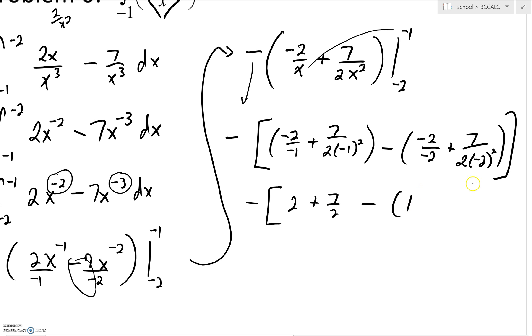And then negative 2 over negative 2, well, that's just going to become a positive 1. Negative 2 squared is a 4. 4 times 2 is 8. So we'd have 7 all over 8. And again, if you'd like to distribute that negative, you could. Here you get 2 plus 7 over 2 minus a 1 and then minus a 7 over 8. You can combine your like terms.